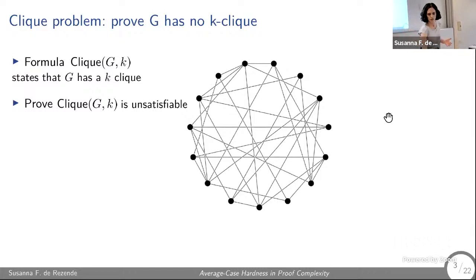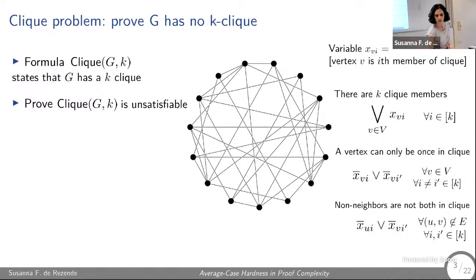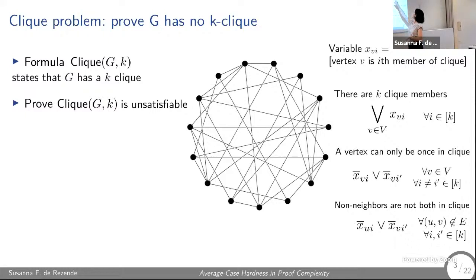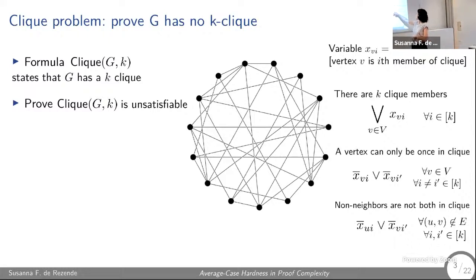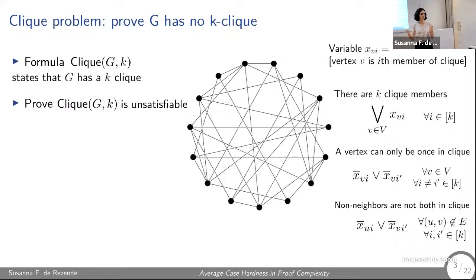To formalize this, we define a formula stating that G has a k-clique. It has variables x_{v,i} meaning vertex v is the i-th member of a clique, where i ranges from 1 to k. There are three types of clauses: one saying k clique members exist (for each position i, some vertex is the i-th member); one saying a vertex can only appear once in the clique; and one saying that if two vertices are not connected by an edge, they cannot both be in the clique.